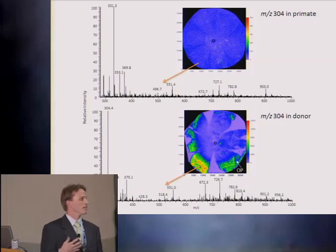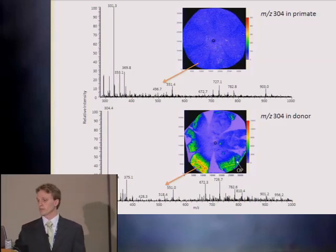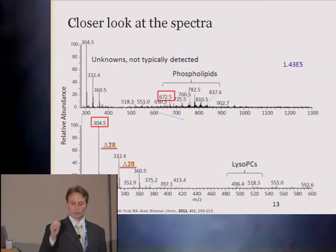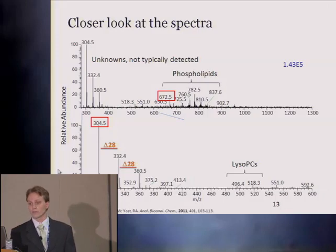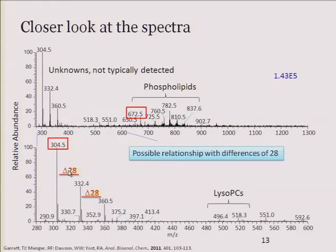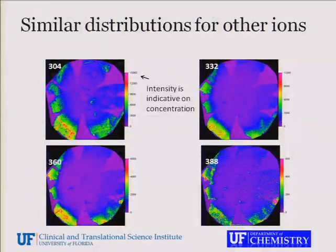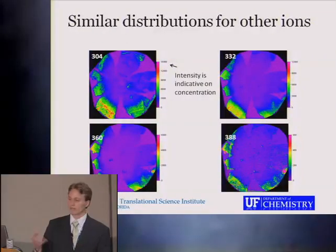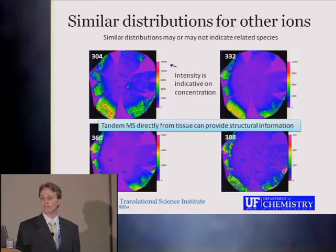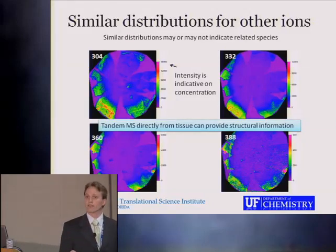Being a mass spectrometrist with an ion trap, the approach was to do tandem mass spectrometry and figure out what those compounds were. Looking at the mass spectrum, we have three compounds separated by masses of 28 — which typically indicates CH₂ differences of ethylene, suggesting a fatty acid chain. Looking at the MS/MS distributions of all those related compounds — including another at m/z 388, also related by 28 — we get similar distributions, but similar distributions alone don't mean they are chemically related.